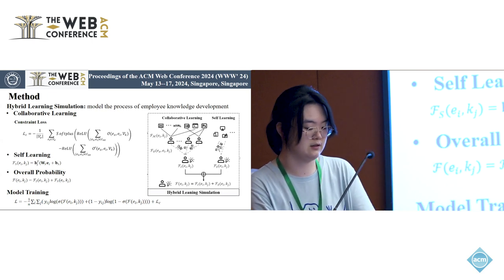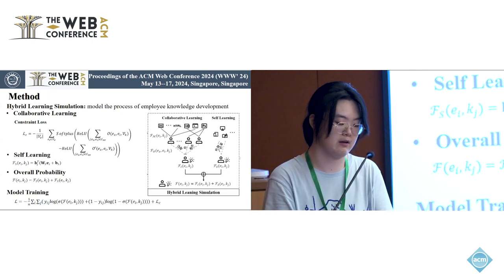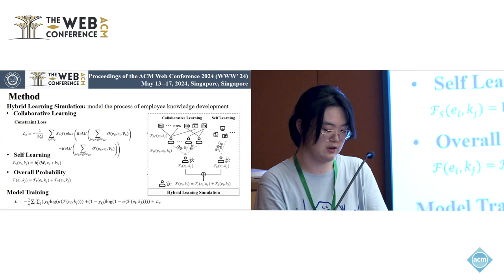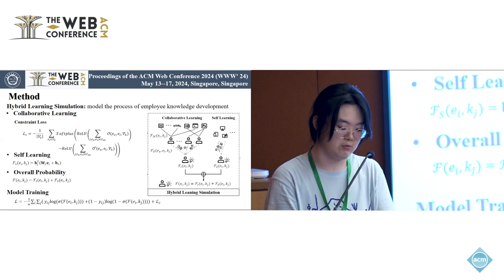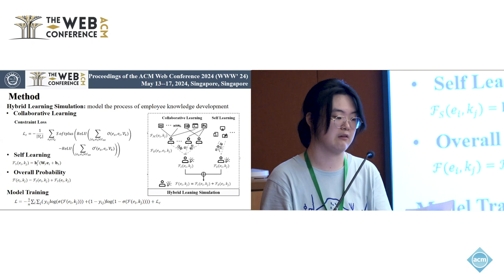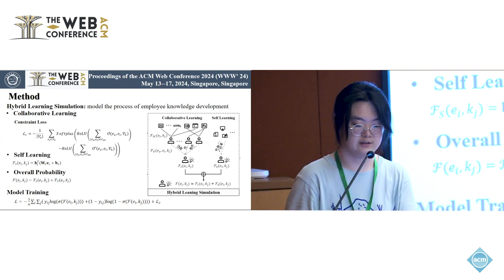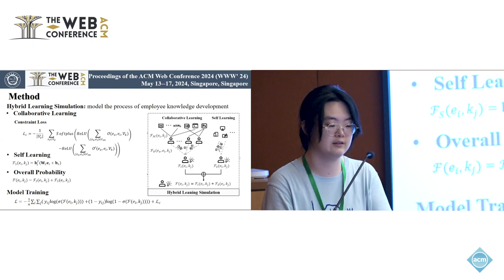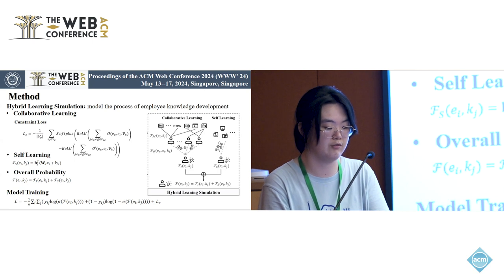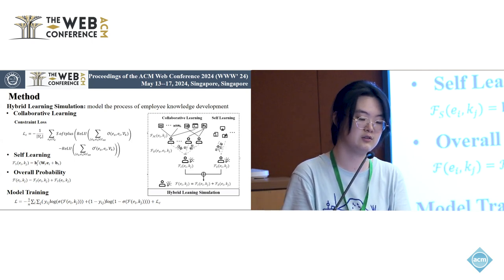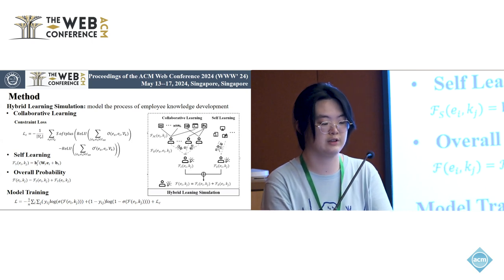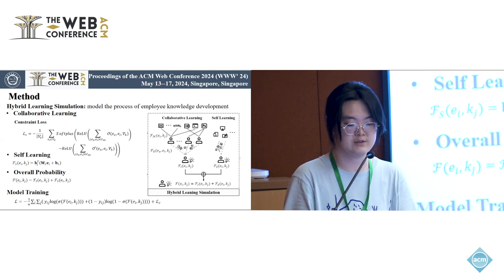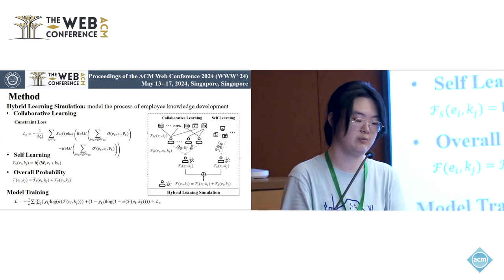Furthermore, we set a constrained contrastive loss for knowledge flow by viewing knowledge that cannot be transferred by collaborators as negative samples. For self-learning simulation, we claim that employee characteristics influence knowledge acquisition, and a personalized knowledge acquisition function is developed according to the employee profiles. Finally, the sum of the inflow score for collaborative learning and the personalized knowledge acquisition score for self-learning is the output to predict the probability of acquiring new job knowledge. The overall objective is designed to update the model parameters accordingly.